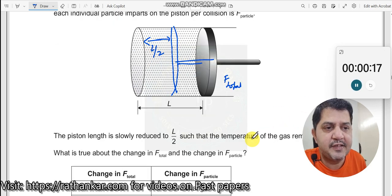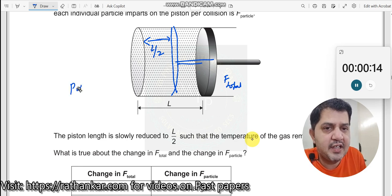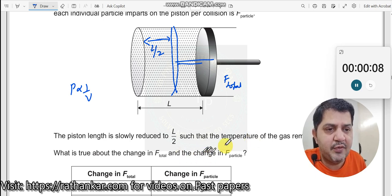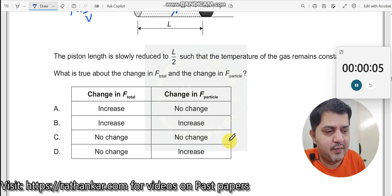Temperature of the gas remains constant. What does it mean? It means that pressure is inversely proportional to volume. This is when temperature remains constant. What is the true change in F_total and change in F_particle? That is what is being asked.